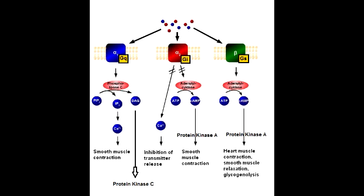Describe the signaling cascade of the GQ protein class. When H1, A1, V1, M1, and M3 receptors are stimulated, the GQ protein activates phospholipase C. Phospholipase C then cleaves plasma membrane lipids into PIP2, which splits into DAG and IP3. DAG goes on to stimulate protein kinase C, which will have its phosphorylation effects.